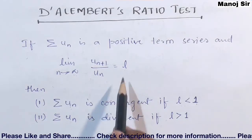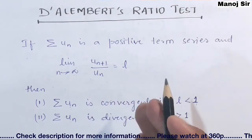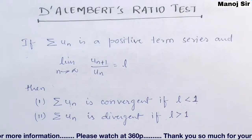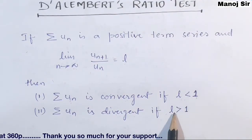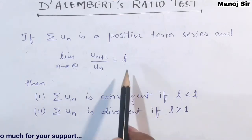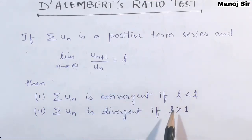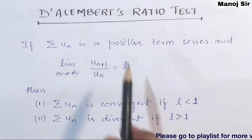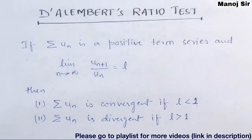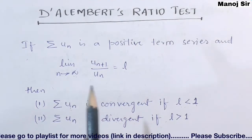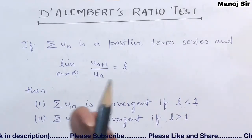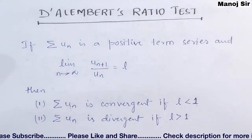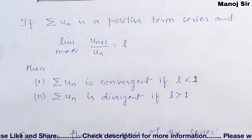What if the value of L comes to be 1? We have talked about two cases: L < 1 and L > 1. If the value of L comes to be 1, then this test — D'Alembert's ratio test — fails. In that case we need to go for the comparison test, as we discussed from videos 11 to 13.